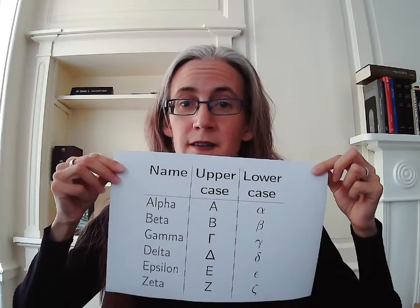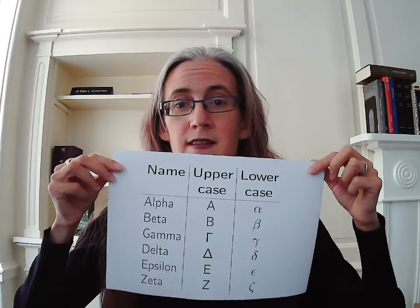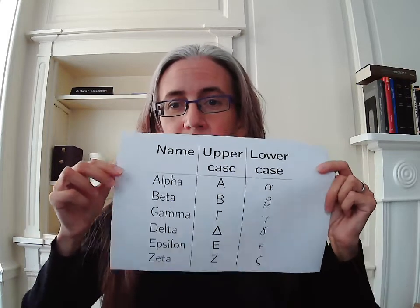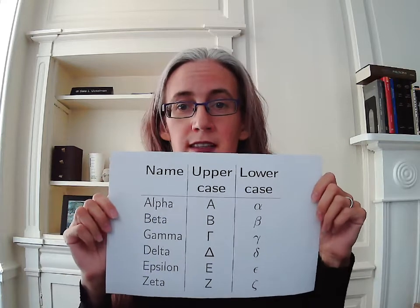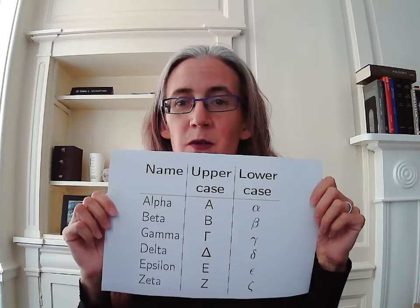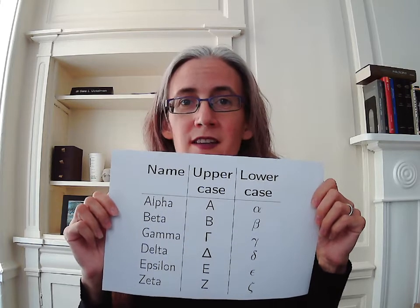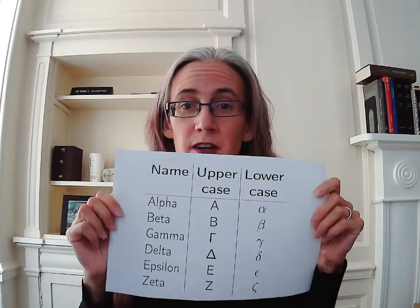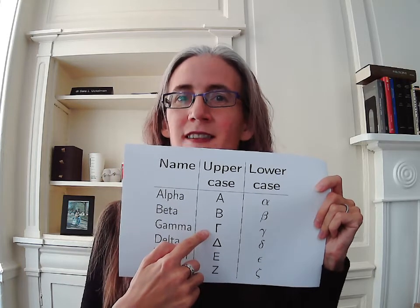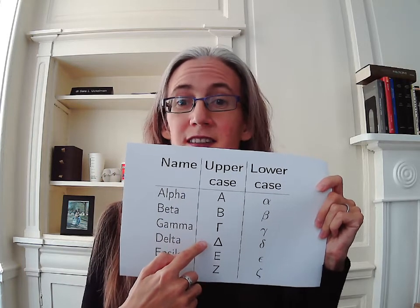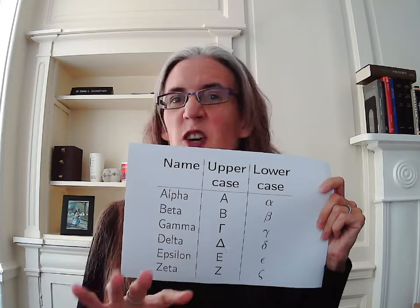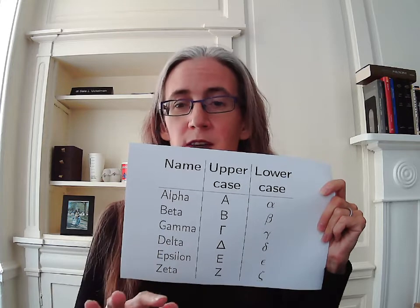So: alpha, beta, gamma, delta, epsilon, zeta. You'll notice that a lot of the uppercase letters look a lot like the Roman alphabet. That won't help you at all, because the ones that look like Roman letters we probably won't be using much. Gamma and delta don't look like Roman letters — those are ones we'll use. But alpha, beta, epsilon — don't even bother learning those uppercase forms. We won't be using them.